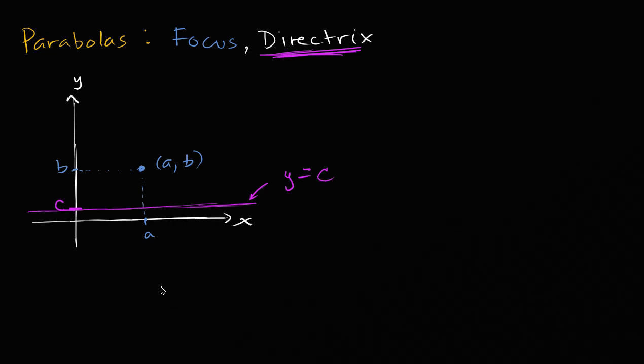So a parabola, what does it mean to be the set of all points that are equidistant between a point and this line? Let's think about what those points might be. Well, this point right over here would be halfway between the focus and the directrix. And then as we move away from x equals a, you're going to get points anywhere along this curve, which is a parabola.